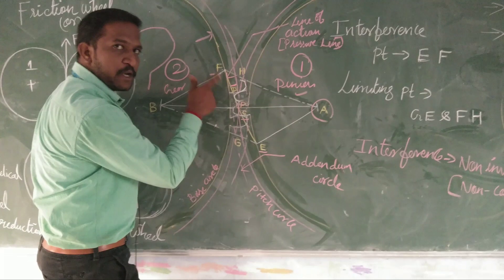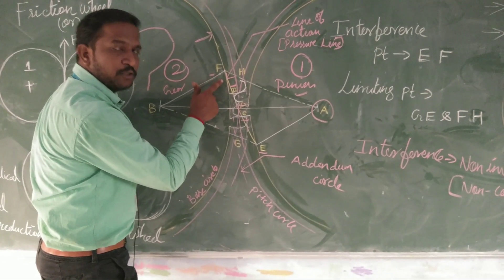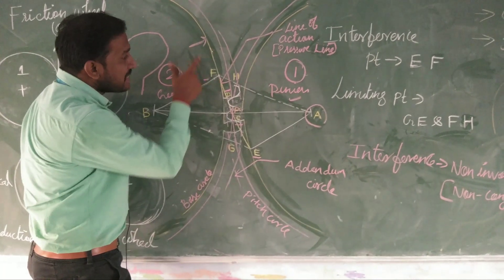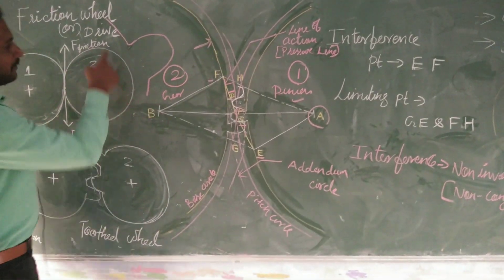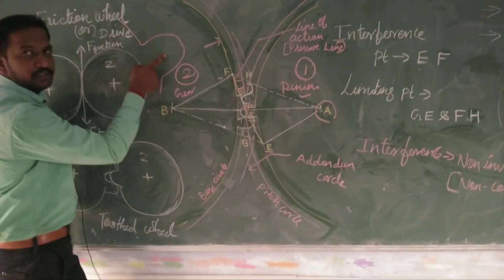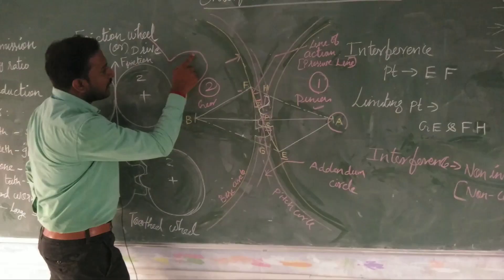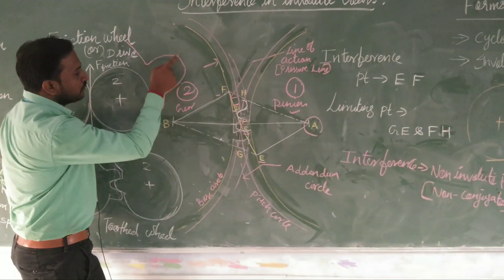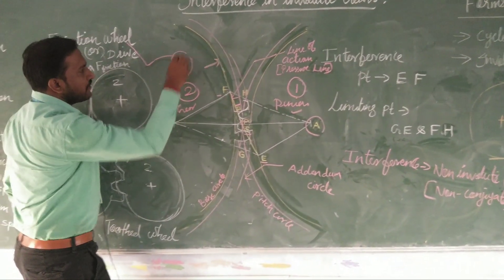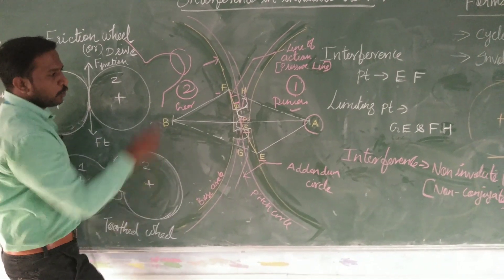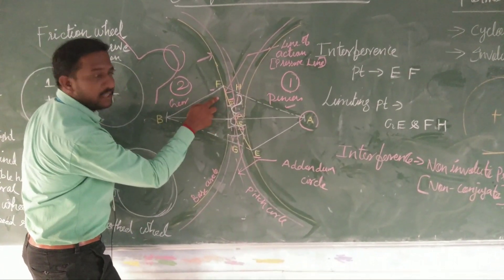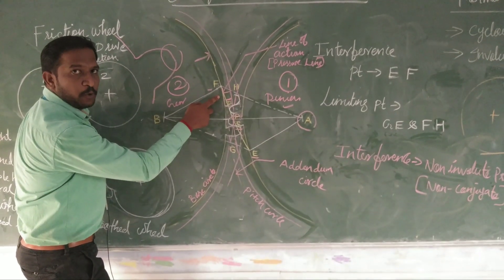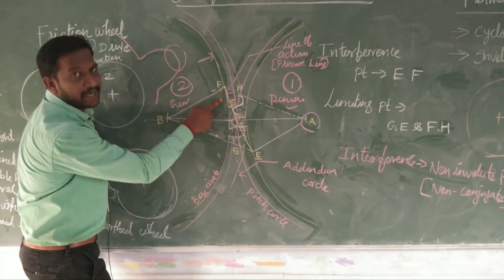If we go beyond the F point, it will intersect the base circle. Normally, the involute profile is like this - we have an involute profile here, and in between we have a radial line, a straight edge. When it goes beyond the base circle, the straight edge falls inside the base circle. This effect is called interference.